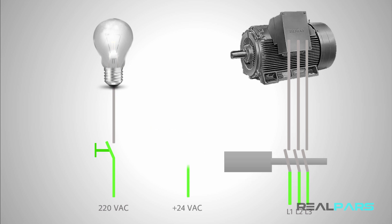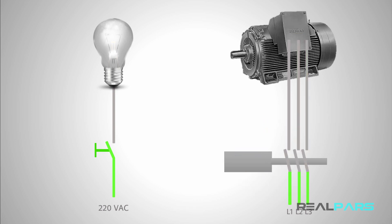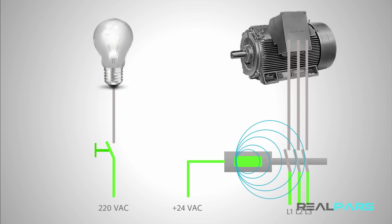When you connect power or electricity to this coil, the coil is energized and creates an electromagnetic field around itself. This field causes the contacts to close, which allows the current to flow from source to load. So the contactor functionality is very simple: when the coil is energized and an electromagnetic field is created, the contacts will be closed.